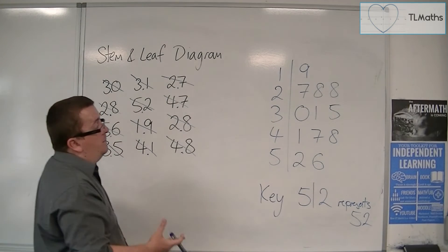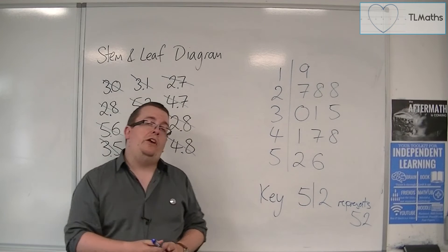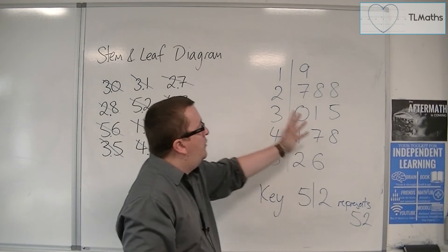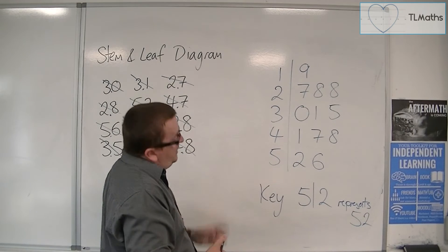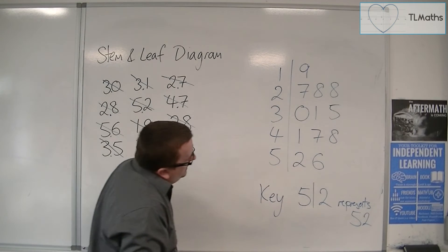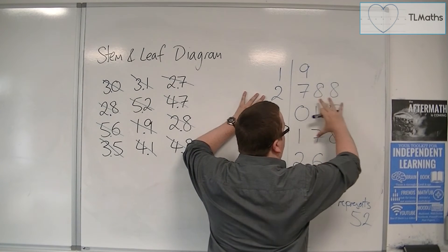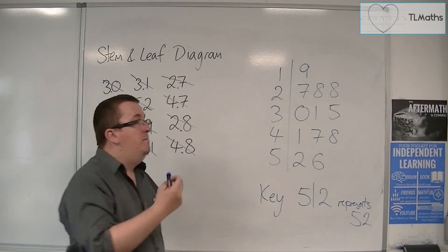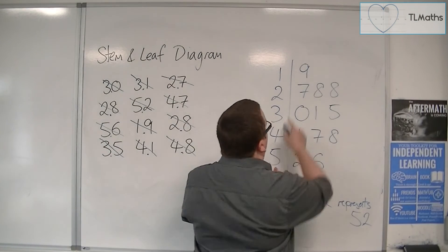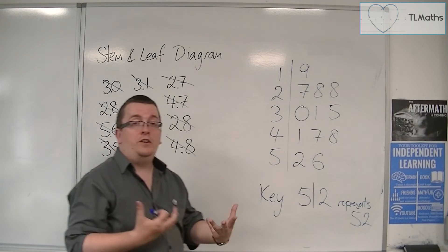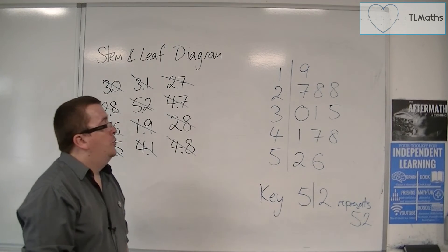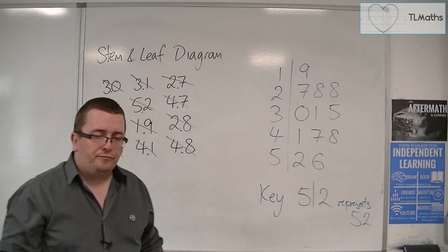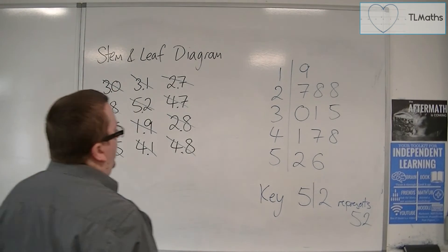What's good is that it is an ordered stem and leaf diagram, which means the numbers are in order. You can kind of see it like a bar chart in the sense that you can see where the majority of the data is. It's easy to read off the minimum and maximum values — 19 and 56 — so you can find the range. You can also find the median quite neatly by using a crossing-off technique.